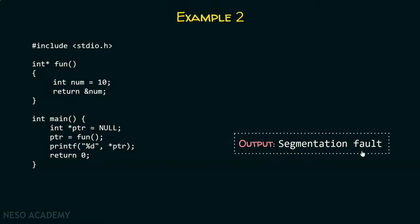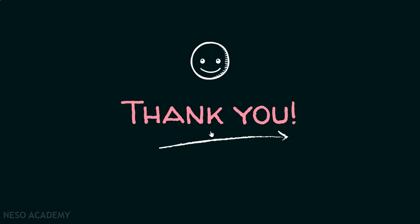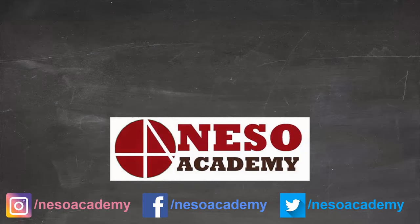Segmentation fault simply means that you are trying to read or write into an illegal memory location. Here, num is local to this function. After the function finishes execution, num will get vanished, which means memory has been de-allocated. We are trying to return the address of de-allocated, non-existing memory — that is why segmentation fault occurs. So it is important to avoid such practices. Try not to return the address of a local variable from a function. Thank you for watching this presentation.